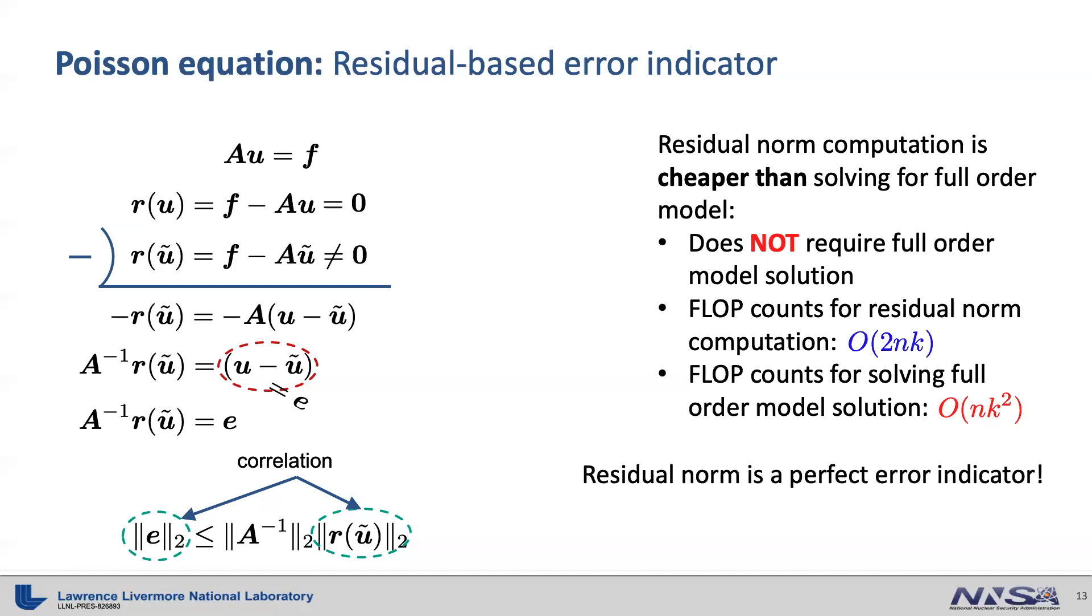While the number of floating-point operations for solving the full model solution is O of n squared k, therefore, the residual norm is a perfect error indicator for Poisson equation. Plus, the residual norm is a physics-informed error indicator because it uses the discretized system of linear equations that represents underlying physics law.